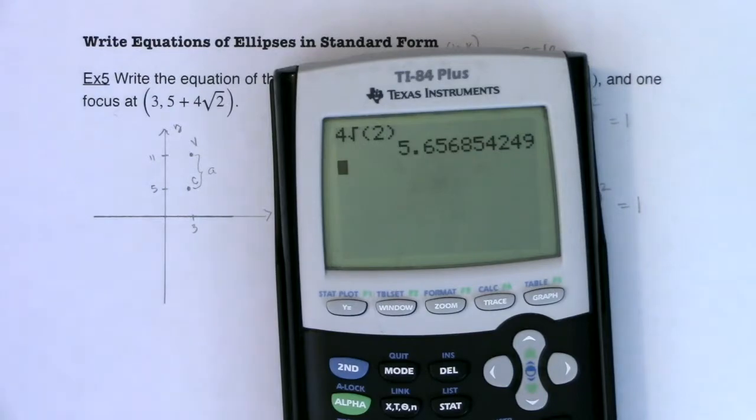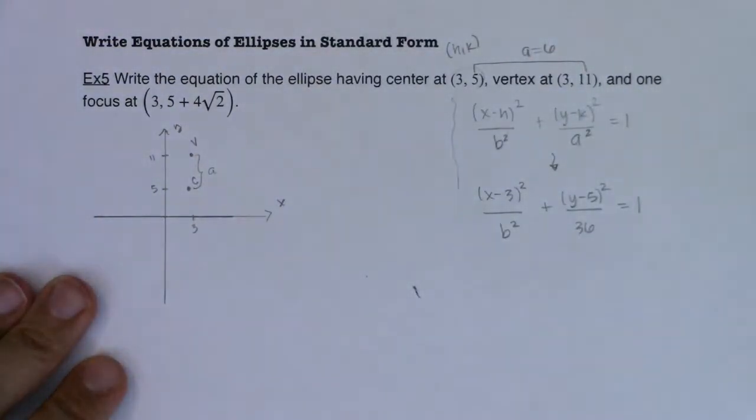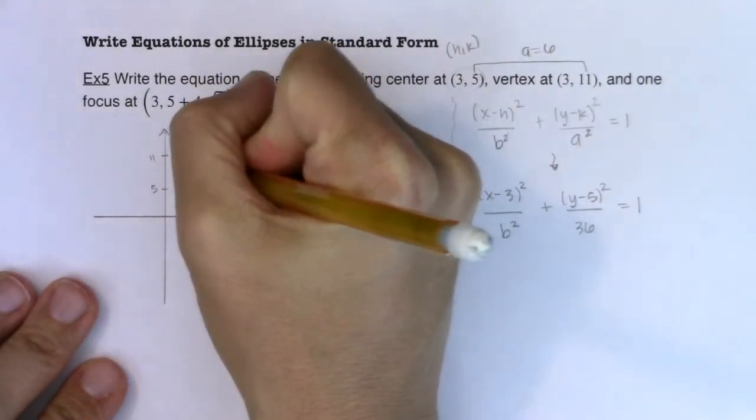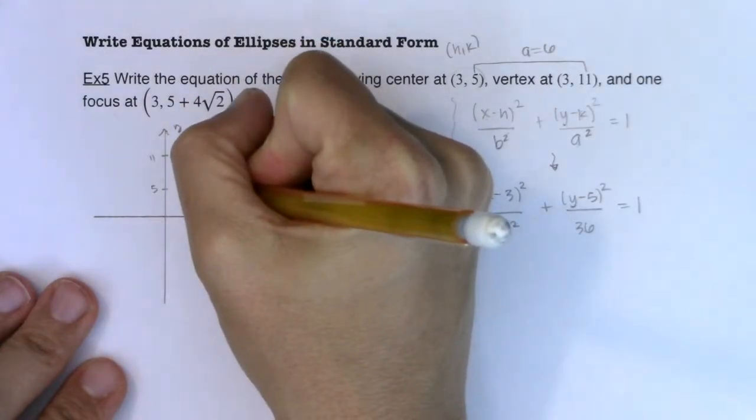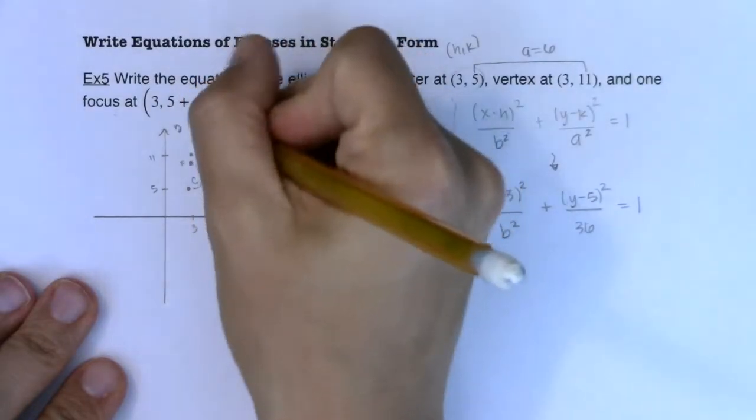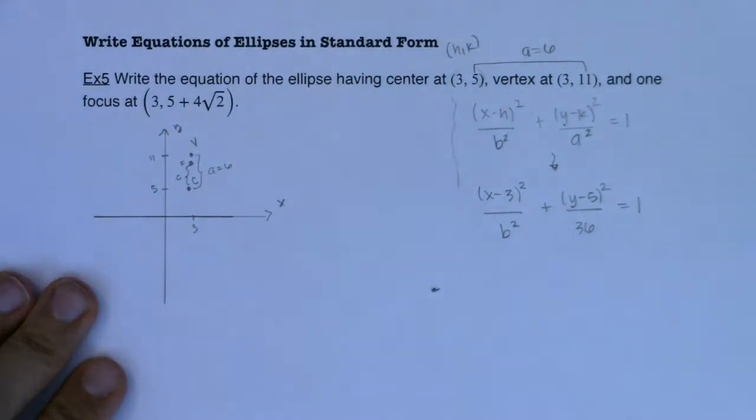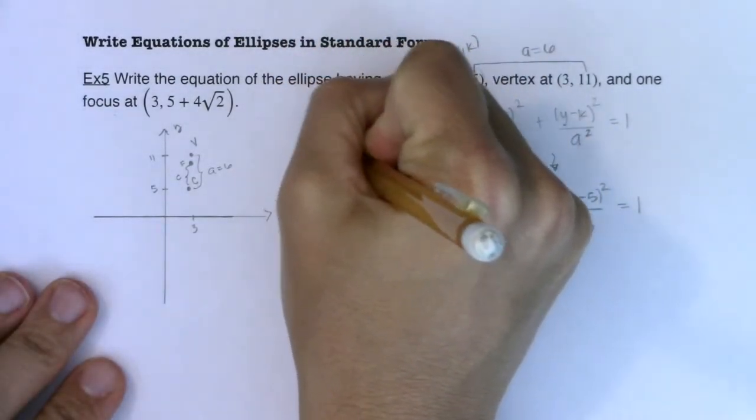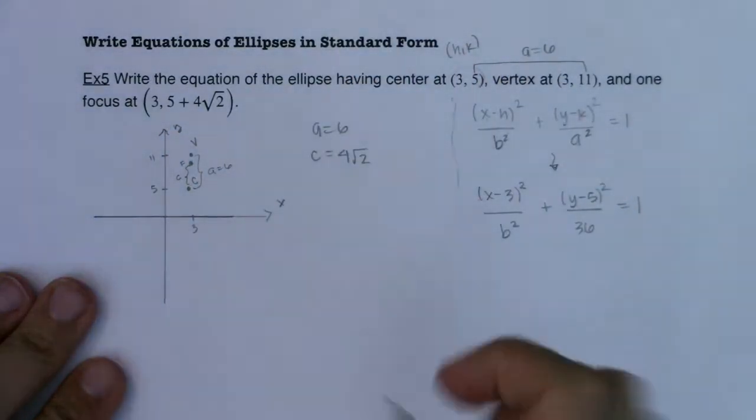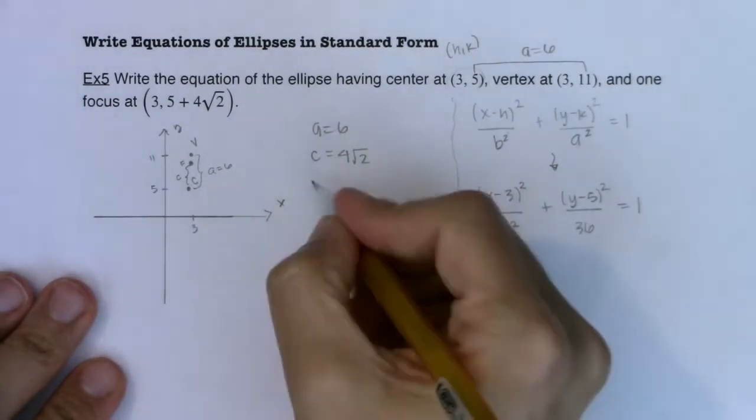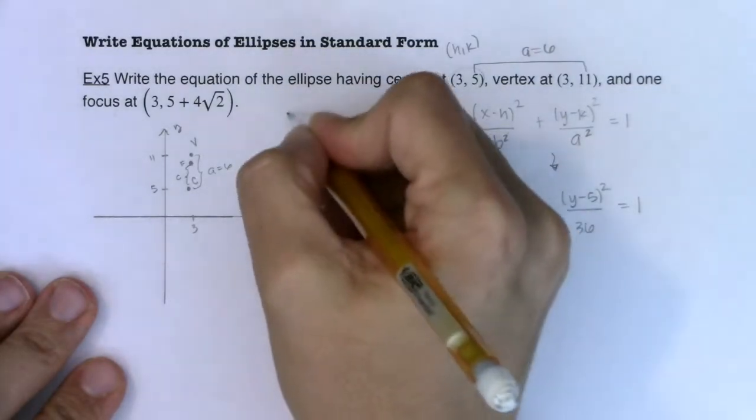So keeping in mind that a is 6, this focus is really close to it here at (3, 5 + 4√2). So this is (3, 5), and then I have to add to it 4√2. So there's the focus. And we know that the distance from your center to your focus is c. So at this point, let's just see what we have here. I know a is 6, and I know c is 4√2. And if you have a and you have c, you can get to b squared.